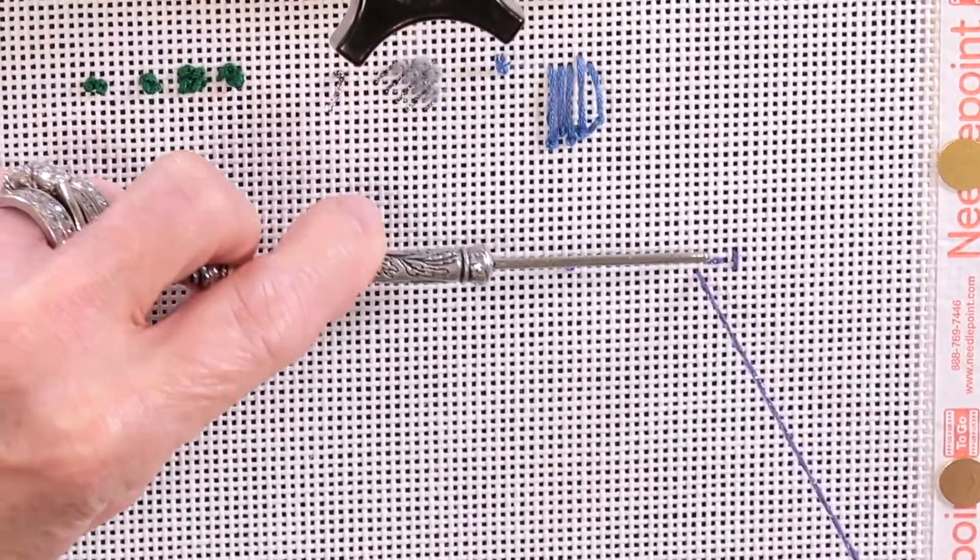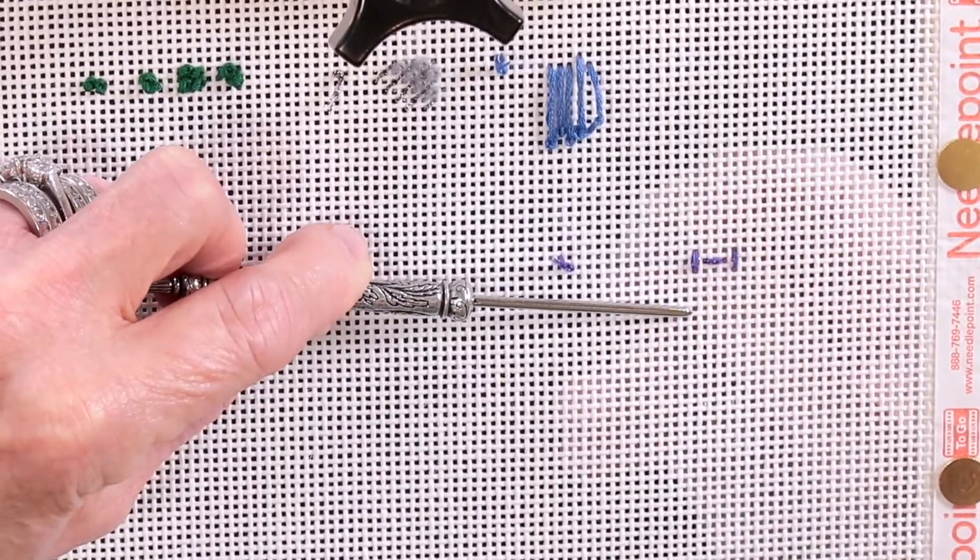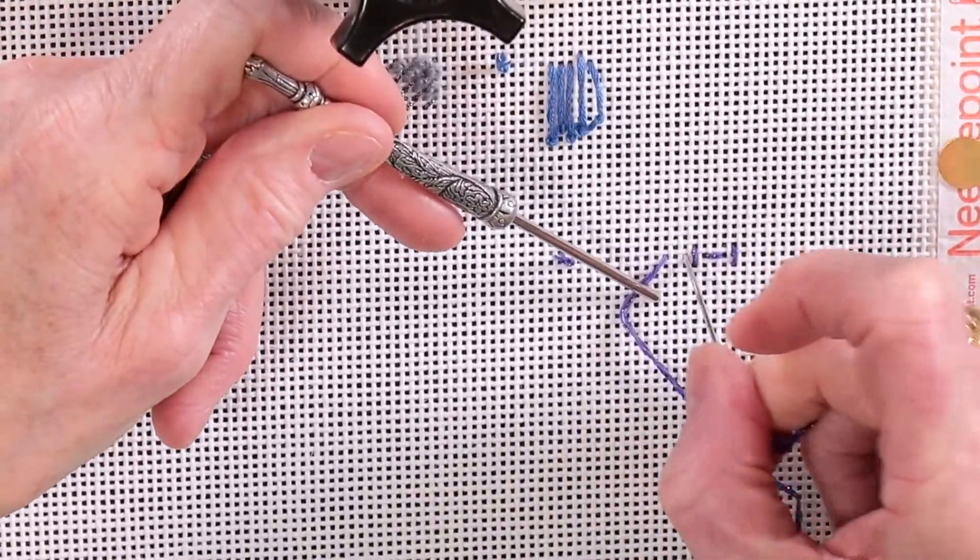Now if this were a painted canvas you'd be able to see the paint showing through, but because it's a demonstration, we want you to be able to see the stitch more than we want you to see the design.